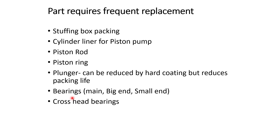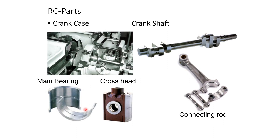Now let us talk about the different spare parts required for frequent maintenance. These parts are: stuffing box packing, cylinder liner for piston, piston rod, piston ring, and plunger — whose life can sometimes be increased by hard coating. Bearings include main bearings, big end bearing, and small end bearing for the connecting rod, and crosshead bearings.